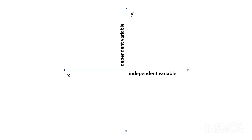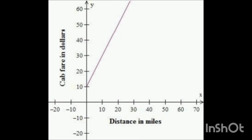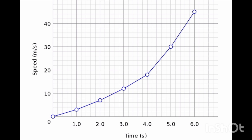This graph shows two axes: the x-axis contains the independent variable and the y-axis contains the dependent variable. Another example: distance in miles versus cab fare in dollars — the more distance you travel, the more fare you have to give. There is a direct relation between distance and the fare you pay to a cab driver or any other driver.